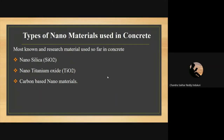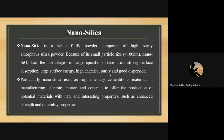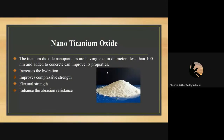Three types of nanomaterials used in concrete are: nanosilica, nanotitanium oxide, and carbon-based nanomaterials. Nanosilica is a white fluffy powder composed of high-purity amorphous silica. Due to its particle size less than 100 nanometers, it has advantages including large surface area, strong surface absorption, high chemical purity, and good dispersion. Nanosilica is used as a supplementary cementitious material in the manufacture of paste, mortar, and concrete, offering enhanced strength and durability properties.